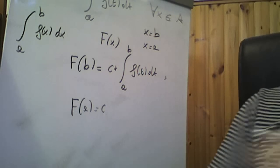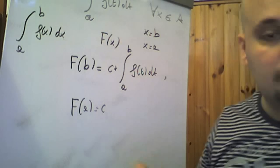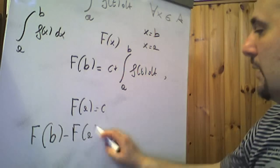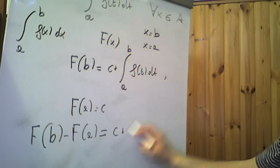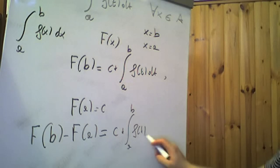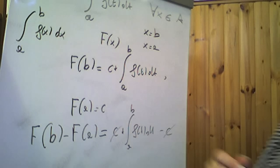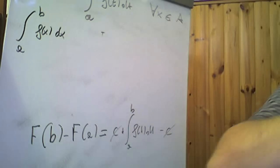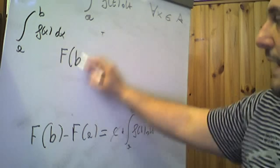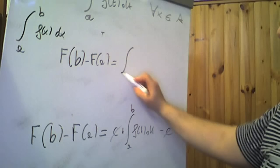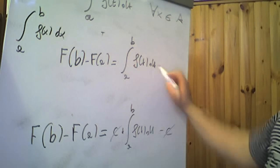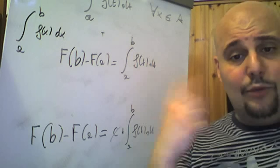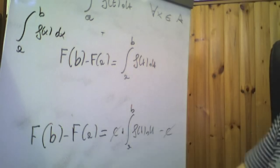A questo punto, sottraendo membro a membro, cioè andando a fare F grande di b meno F grande di a, otteniamo che c più l'integrale tra a e b di f di t dt meno c: c e meno c se ne vanno. Quindi troviamo che la differenza F grande di b meno F grande di a è proprio l'integrale tra a e b di f di t dt. E se al posto di t sostituiamo la variabile x, andiamo a enunciare il seguente teorema.